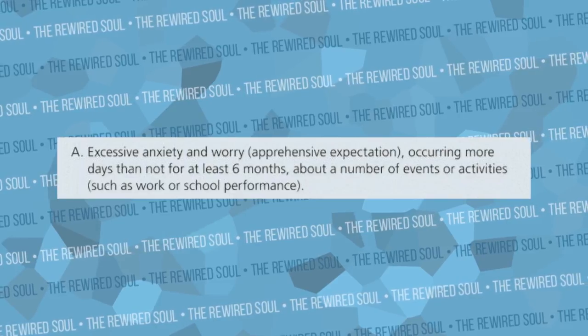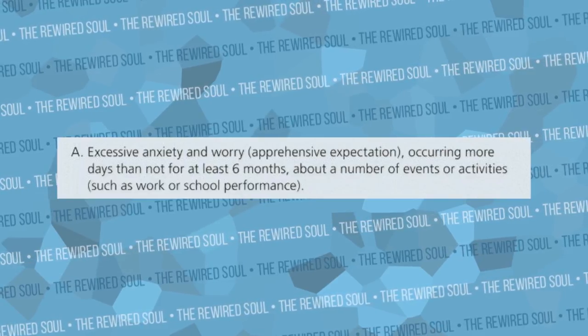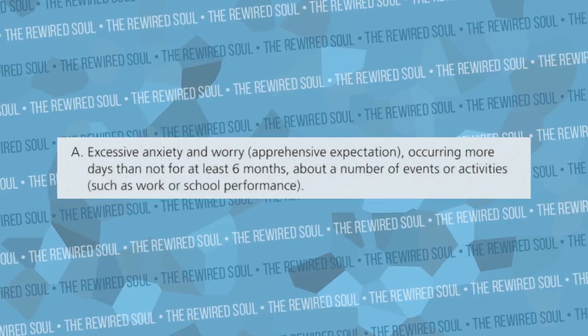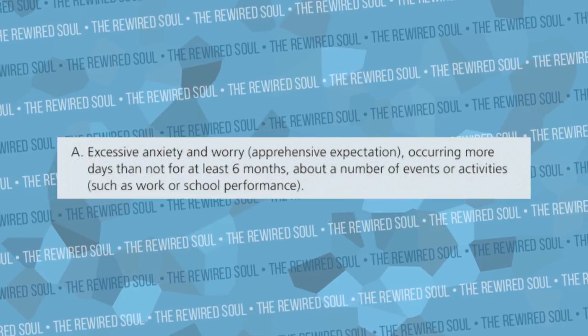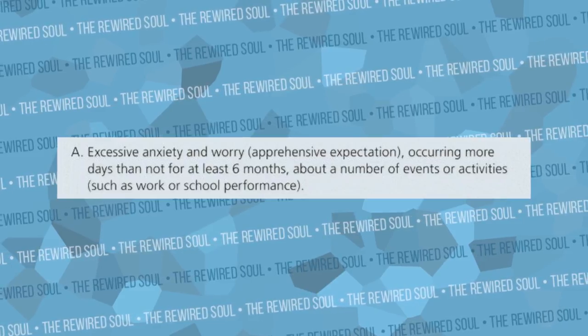Symptom number one is excessive anxiety and worry — apprehensive expectation — occurring more days than not for at least six months, about a number of events or activities such as work, school, or performance. This is something that's been happening for at least six months, more days than not. If 51% of your days are like this, that's where the symptom takes place — excessive worry about normal things people do on a day-to-day basis: going to work, taking care of kids, paying bills, and all sorts of things like that.